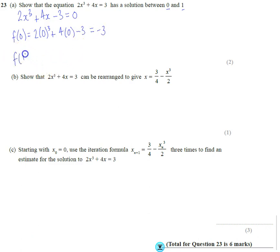If I do the same thing for 1, it's going to be 2 lots of 1 cubed plus 4 lots of 1 and then take off 3. I get 2 plus 4 minus 3, which gives us 6 minus 3 which is plus 3.